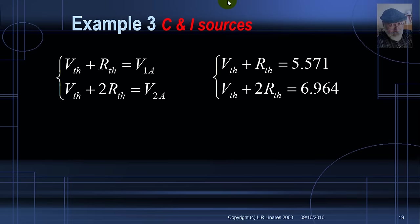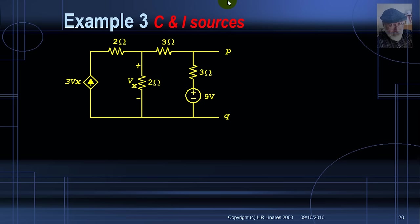The solution is 4.178 volts and 1.393 ohms. That is the equivalent Thevenin-Helmholtz circuit for that network.